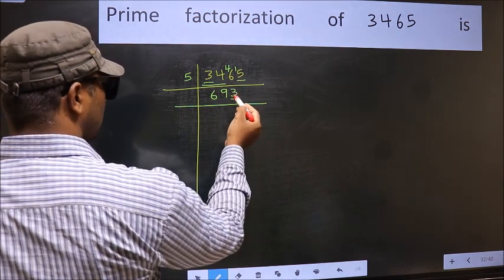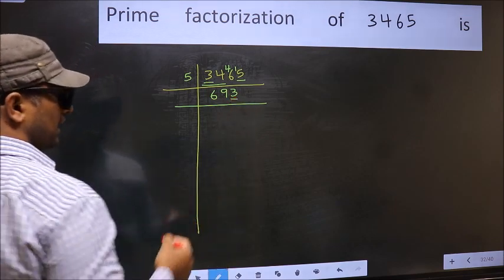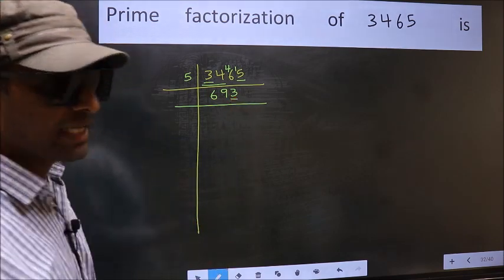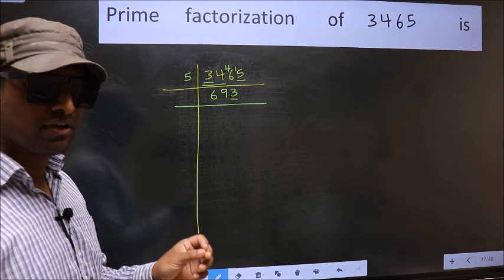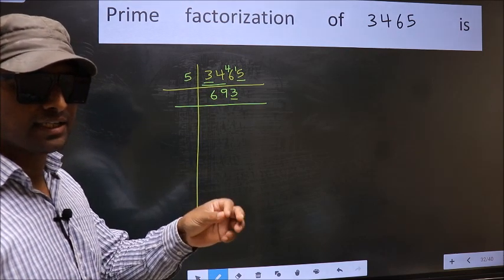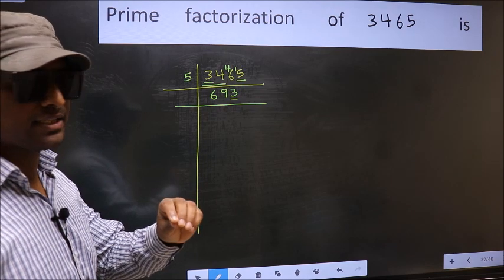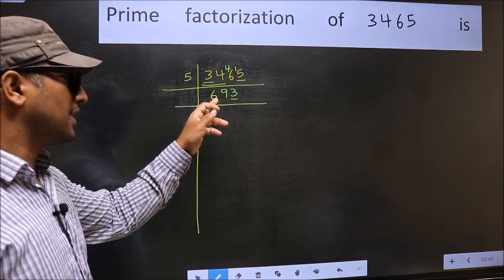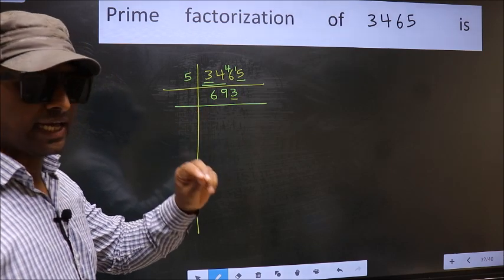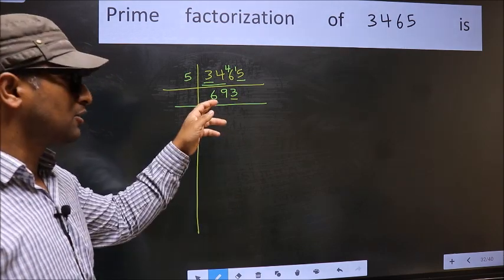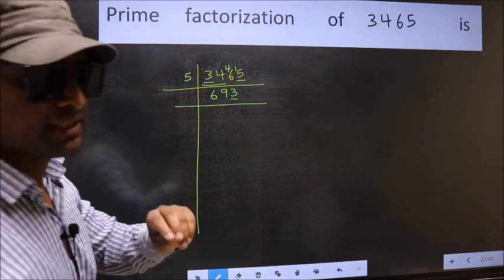Now the last digit 3 is not even, so not divisible by 2. Next prime number is 3. To check divisibility by 3, we should add the digits. What I mean is, 6+9+3=18, and 18 is divisible by 3. So this number is also divisible by 3.